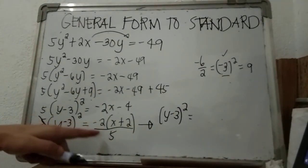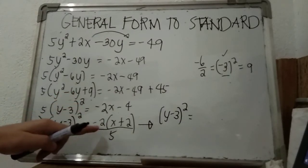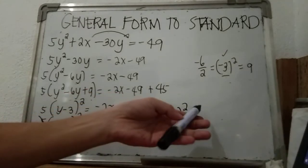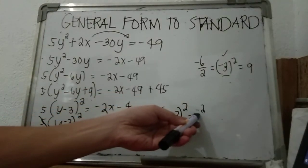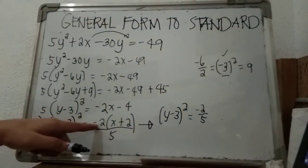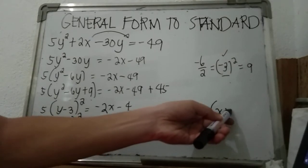You can let negative 2 over 5 be the coefficient. So we have here negative 2 over 5 times (x plus 2).